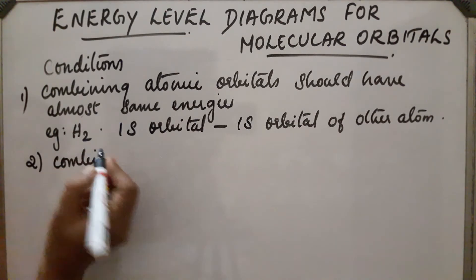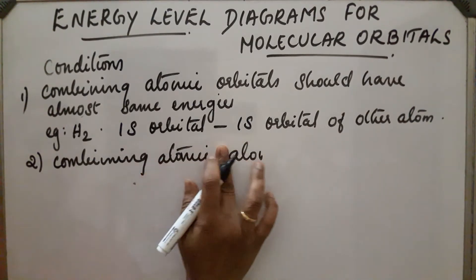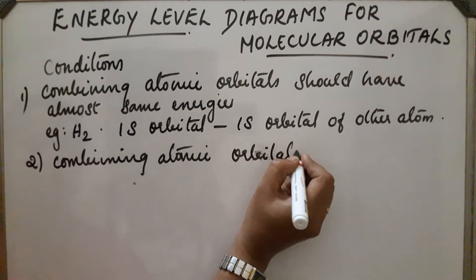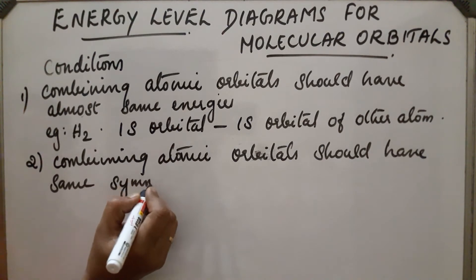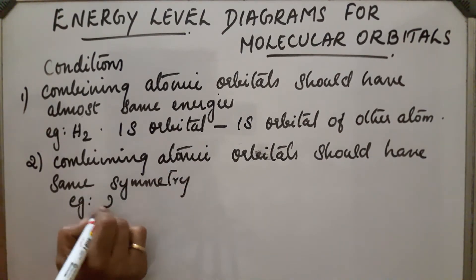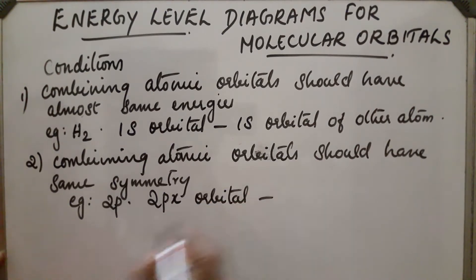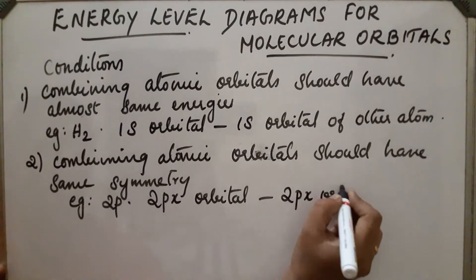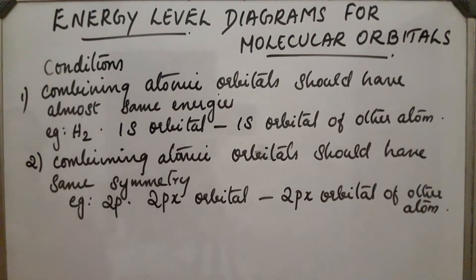Second condition: combining atomic orbitals should have the same symmetry. For example, in the case of 2p orbitals, the 2px orbital of one atom can combine only with the 2px orbital of the other atom. Both atomic orbitals must have the same symmetry. The 2px orbital cannot overlap with the 2py or 2pz — only those atomic orbitals having the same symmetry must combine.